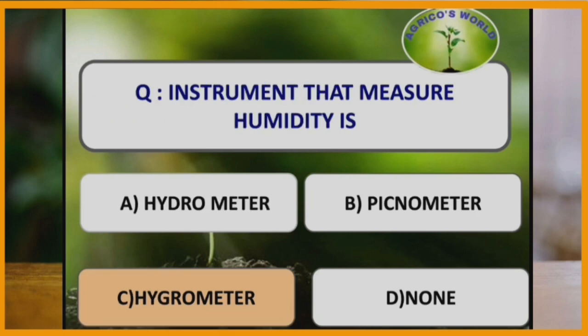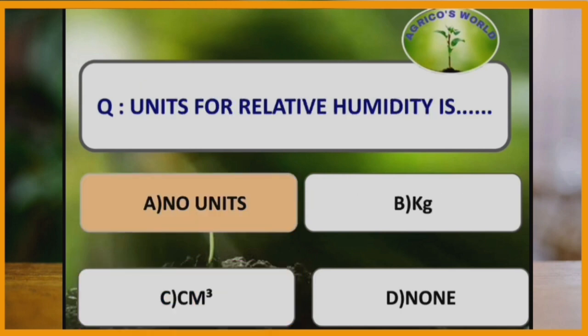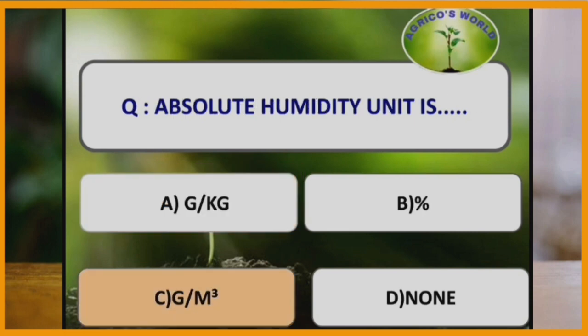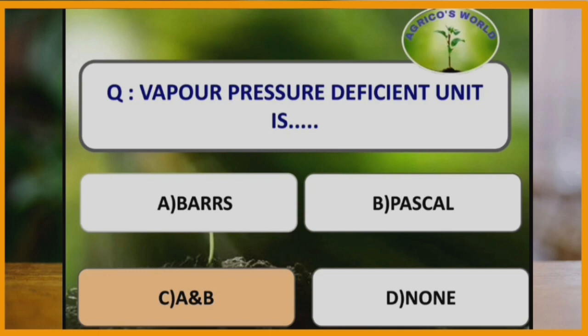The instrument that measures humidity is a hygrometer. Relative humidity does not have any units because it is measured in percentage. Absolute humidity unit is gram per meter cube. Specific humidity unit is gram per kg. Vapour pressure deficit units are bars and pascal.